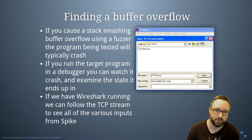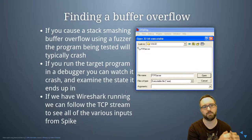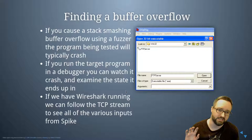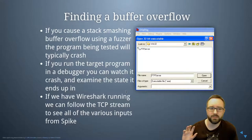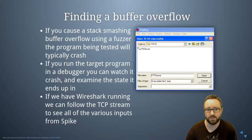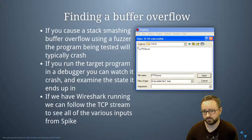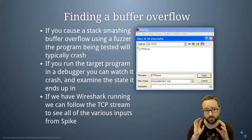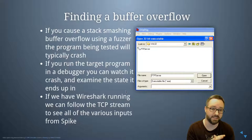When fuzzing software, what you're looking for — particularly with binary system files, network services, and system software written in C or C++ which are not memory-safe — is program crashes. A program crash is a big red flag. If you manage to create input that crashes the program, that's something to examine in more detail. Running the target program in a debugger lets you watch it crash and see the exact state it's in when it crashes.